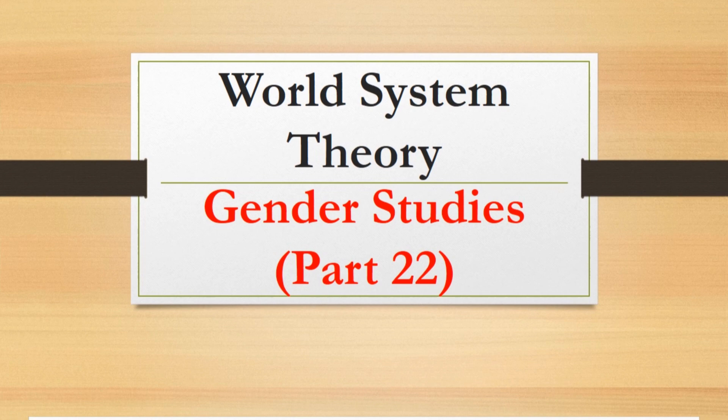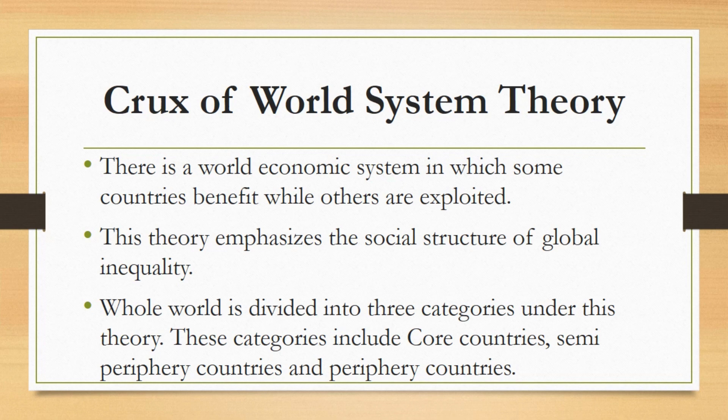First of all, the crux of world system theory. This theory says that there is a world economic system in which some countries benefit while others are exploited. Basically, this theory emphasizes the social structure of global inequality. The whole world is divided into three categories under this theory: core countries, semi-periphery countries, and periphery countries.